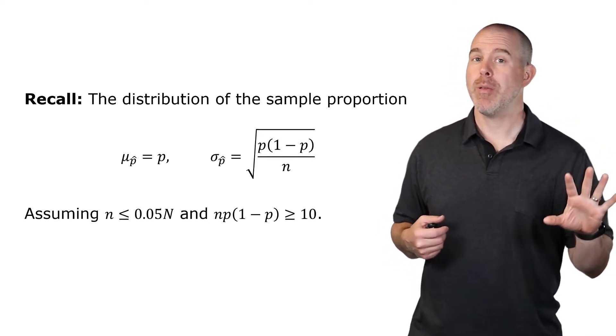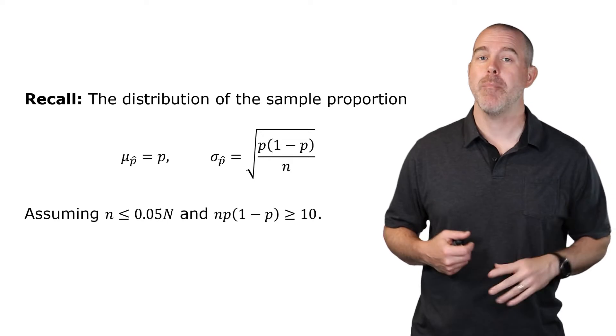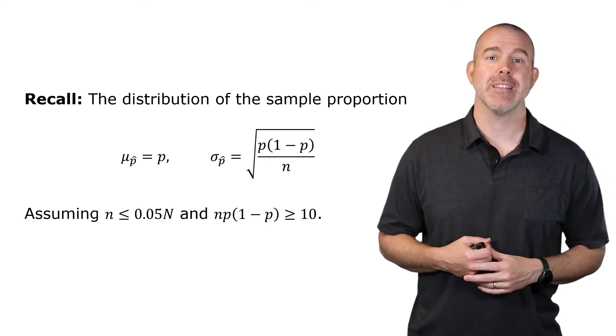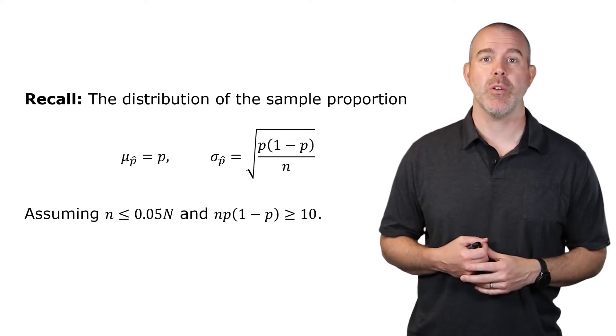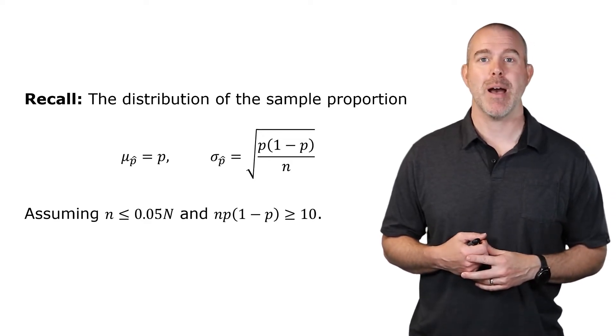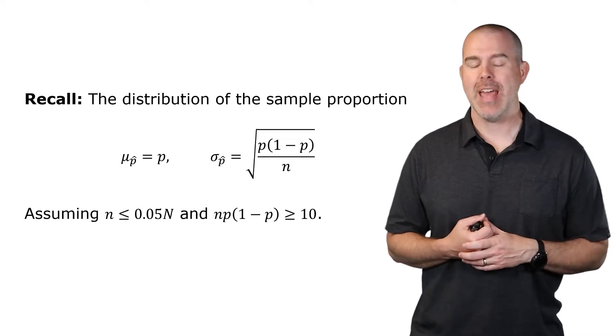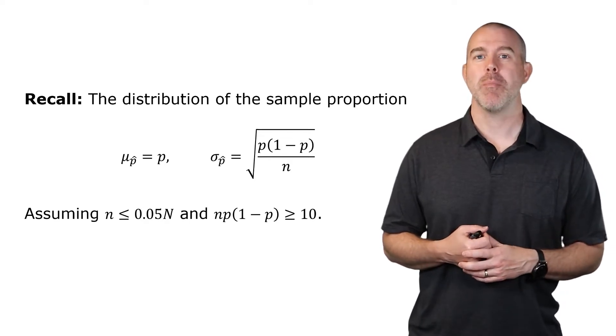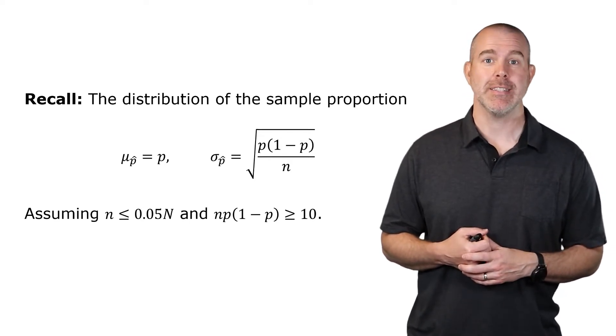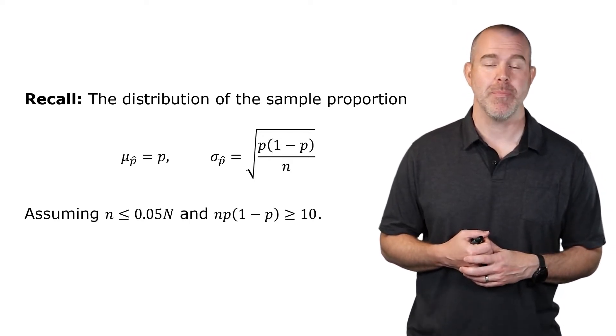This is assuming that we have a sample size that is less than or equal to 5% of the population, which is usually the case, and that n times p times one minus p is at least 10.